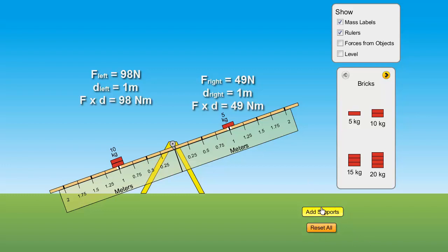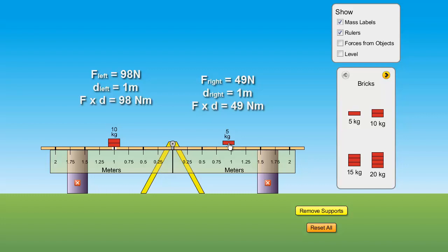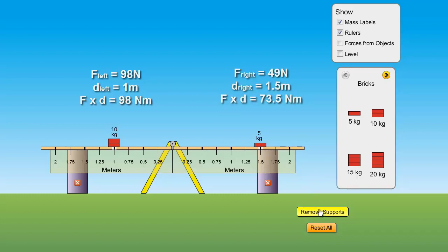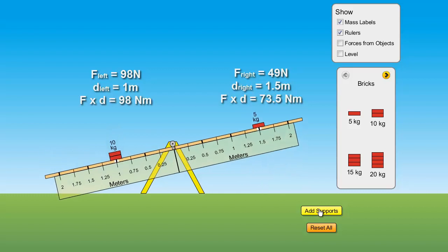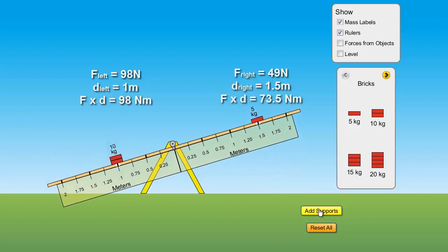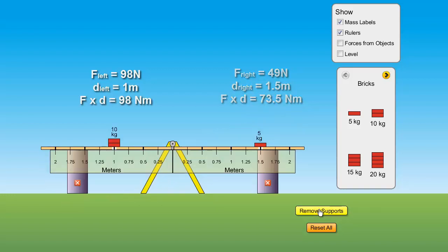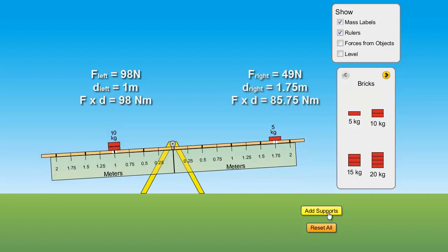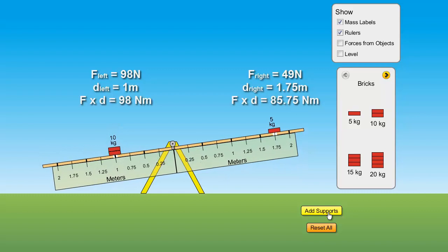Now, if I go back and take my 5 kilogram mass, I think most of us, with our experience with seesaws before, would understand that we'd have to move it to the right. We've got to get further out. The lighter kid always has to fly at his butt towards the end of the seesaw. When I remove the supports here, the 10 kilogram still wins, but maybe not as vigorously. Let's put them back. Slide it out a little further. Almost.